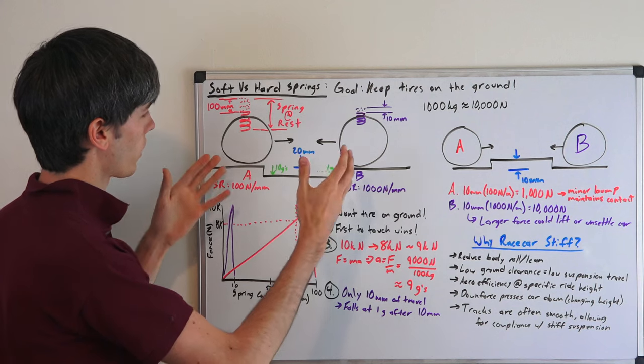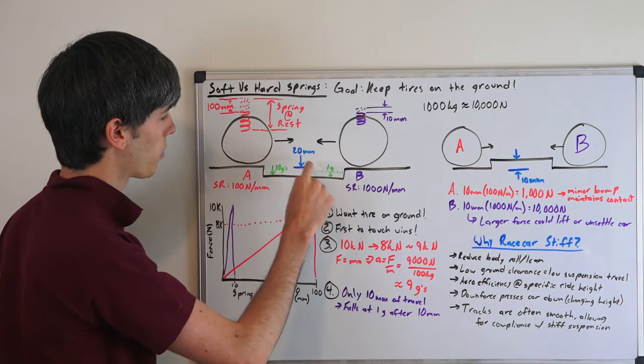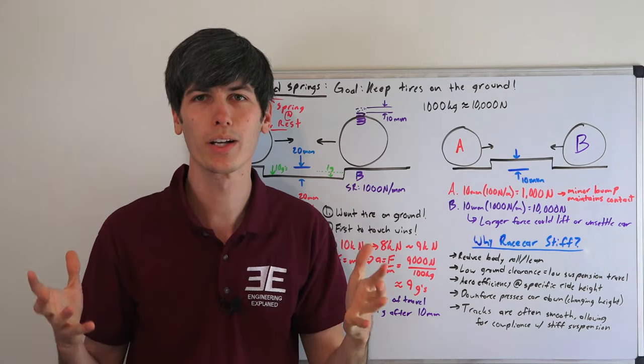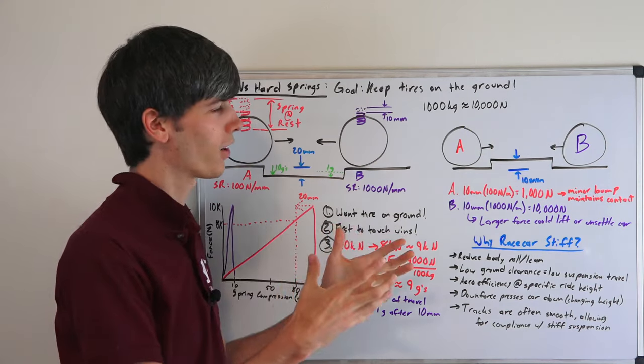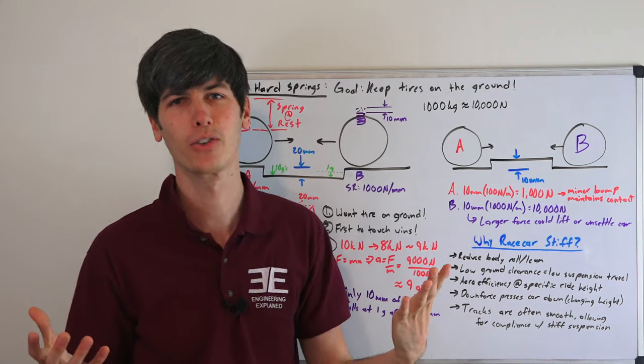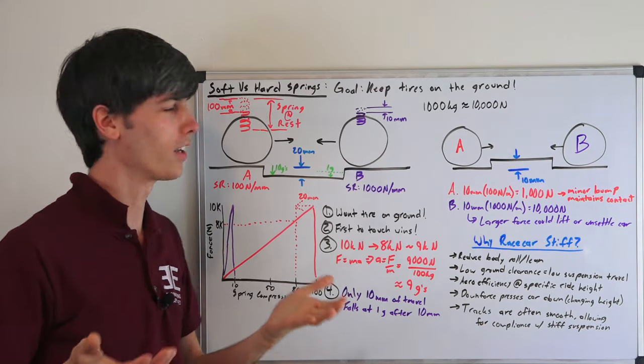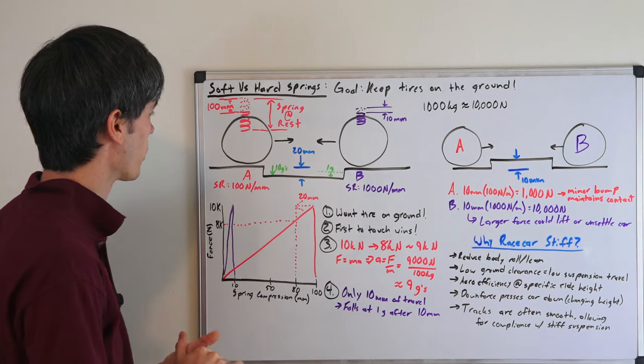So what's going to happen is these are going to travel over this depression and we want to maintain contact with the ground. The whole point of a suspension is to keep the tires on the ground. So hopefully that much is understood. It seems pretty obvious. Cars can only do the things that they do if the tires are actually touching the ground.